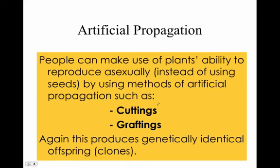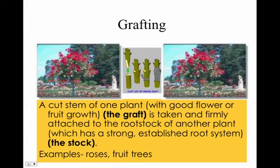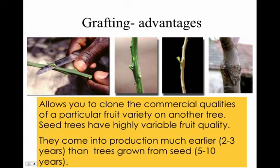We've talked about cuttings — you can make a cutting of a plant. Geraniums are an example: cuttings are small pieces of the stem, usually with leaves attached, and a plant can grow from this. Grafting is when a stem of one plant with good flowers or fruit is grafted — almost like glued — onto another plant, and you get a hybrid plant. The advantage is this allows you to clone commercial quantities of a particular fruit.